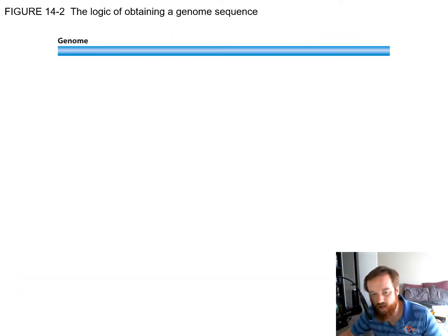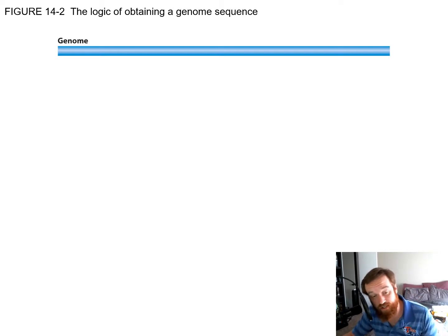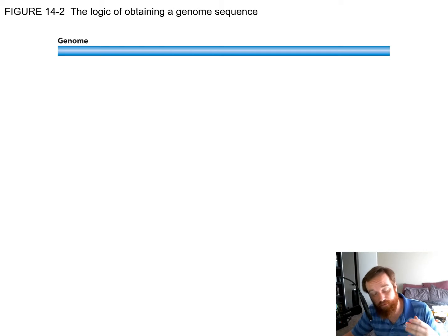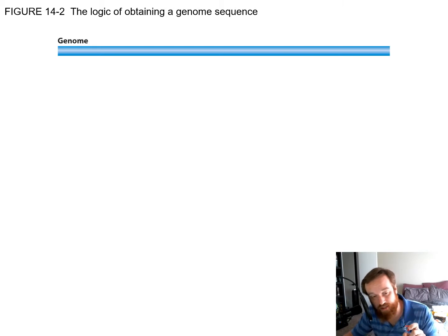Nowadays, it's easy to do genomic science because there are a lot of reference genomes available. A reference genome is a complete sequence of the entire genome of an organism — every single nucleotide mapped out in order along each chromosome.